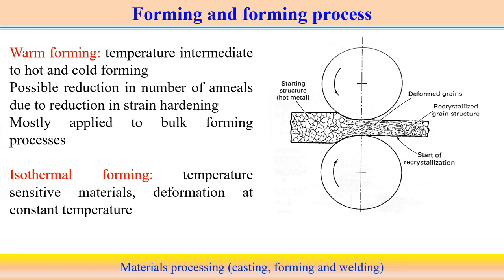Warm forming is sometimes used because it allows a possible reduction in the number of annealing operations due to reduction of strain hardening. Strain hardening is one important parameter associated with metal forming. Warm forming can be applied to bulk forming operations instead of cold forming, giving different deformation behavior. Taking the example of a rolling operation: before deformation, we get an almost equiaxed structure with a relatively bigger average grain size.